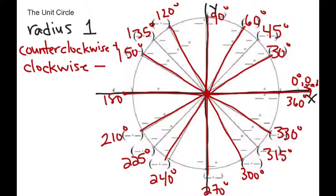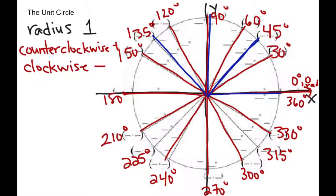The ones in between that we haven't talked about yet are our multiples of 45. So you start at 0, then you're at 45. Another 45 is 90, then another 45 is 135, then 180, then 225, then 270, then 315, and then back to 360.